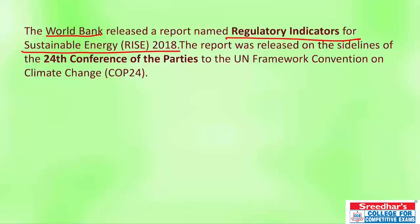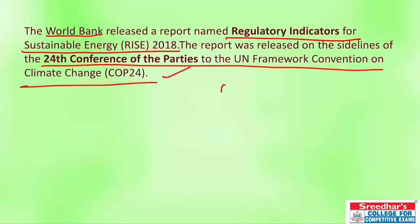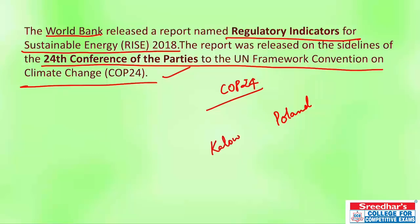A report named 'Regulatory Indicators for Sustainable Energy 2018' was released by the World Bank at COP24 — the 24th Conference of the Parties to the United Nations Framework Convention on Climate Change. The UN Climate Change Conference was held in Katowice, Poland, and on its sidelines the World Bank released this report on regulatory indicators for sustainable energy.